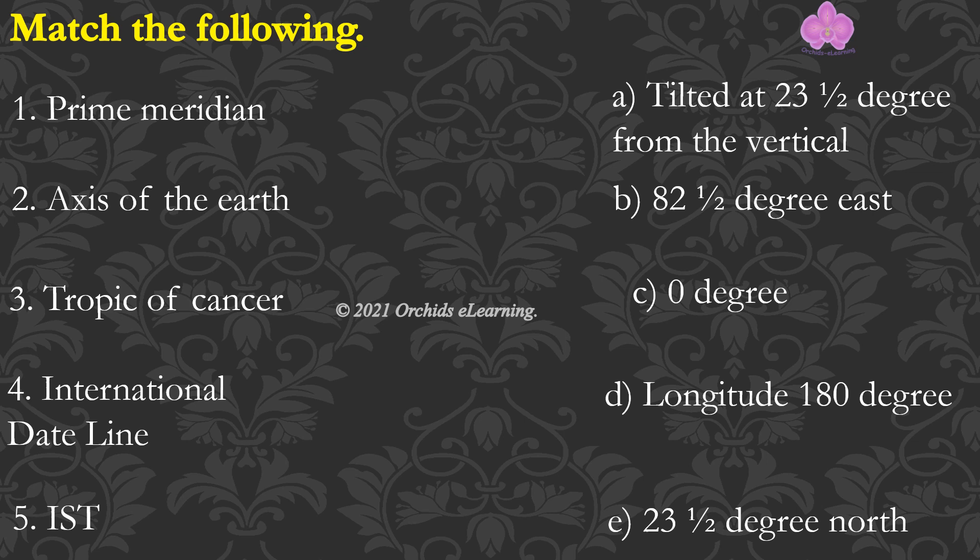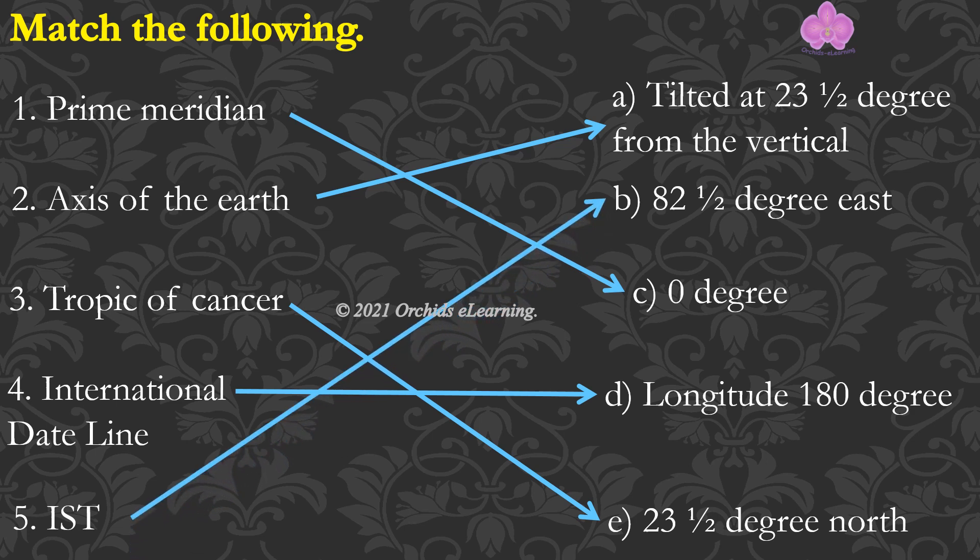Answer. Prime Meridian, zero degree. Axis of the Earth, tilted at 23.5 degrees from the vertical. Tropic of Cancer, 23.5 degrees north. International dateline, longitude 180 degree. IST, 82.5 degrees east.